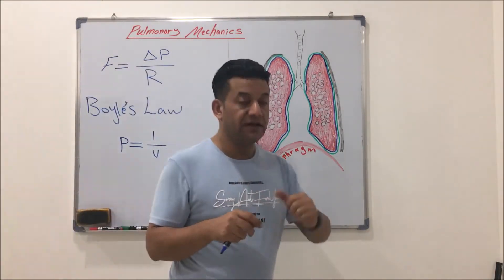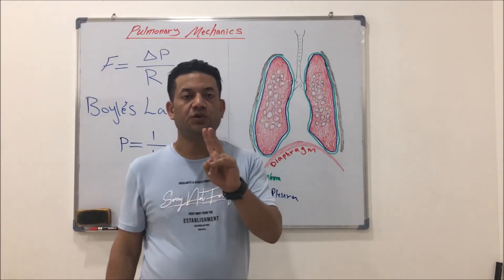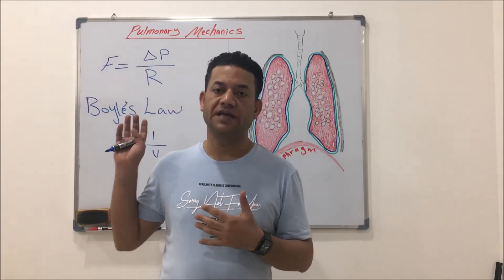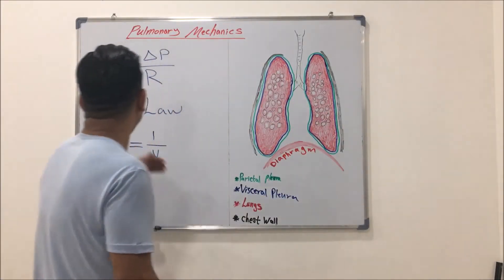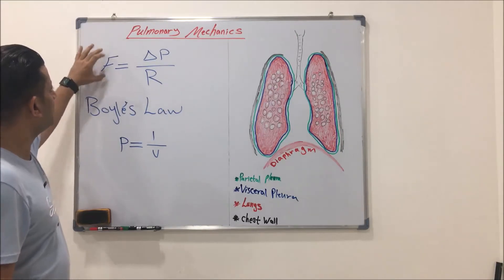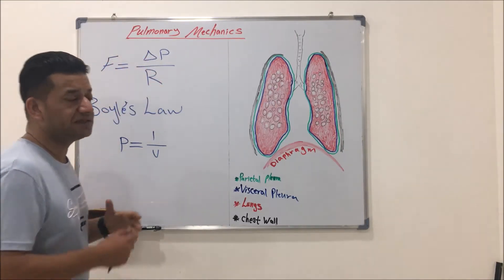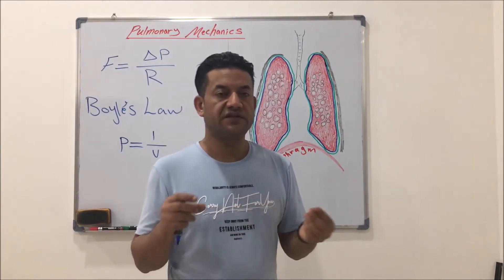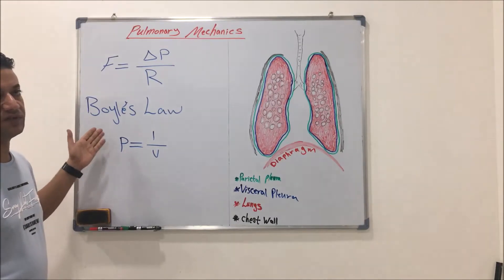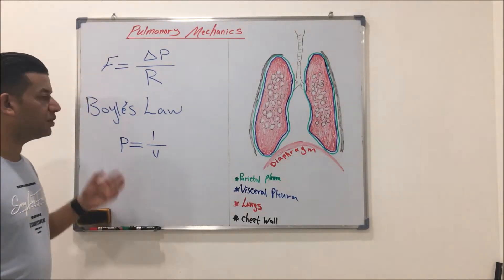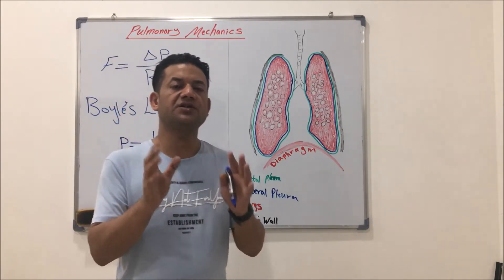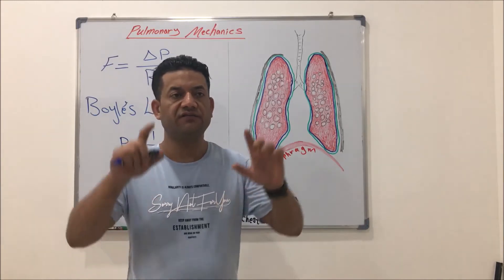Let's recall the two important principles of physics we need to understand before explaining pulmonary mechanics — inspiration and expiration. The first is the general law of flow: flow equals delta P over R, where delta P is the change or difference in pressure and R is the resistance. The second principle is Boyle's law, which states that when temperature is constant, the pressure of a gas is negatively proportional to the volume of the container.